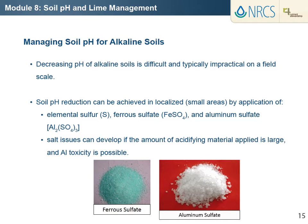Ferrous sulfate and aluminum sulfate can also be used to lower pH by contributing acidic cations. The amount of an acidifying material required depends on the volume of soil to be treated, free lime content, soil cation exchange capacity, desired pH, and acidifying effect of the material applied. Salt issues can develop if the amount of acidifying material applied is large, and element toxicity is possible when materials containing aluminum are used.